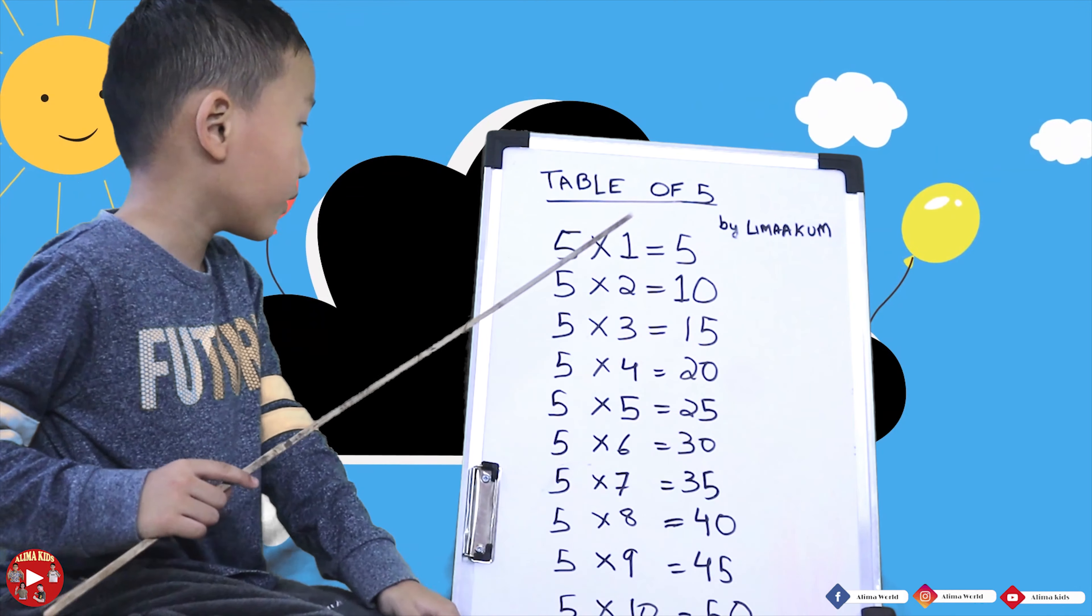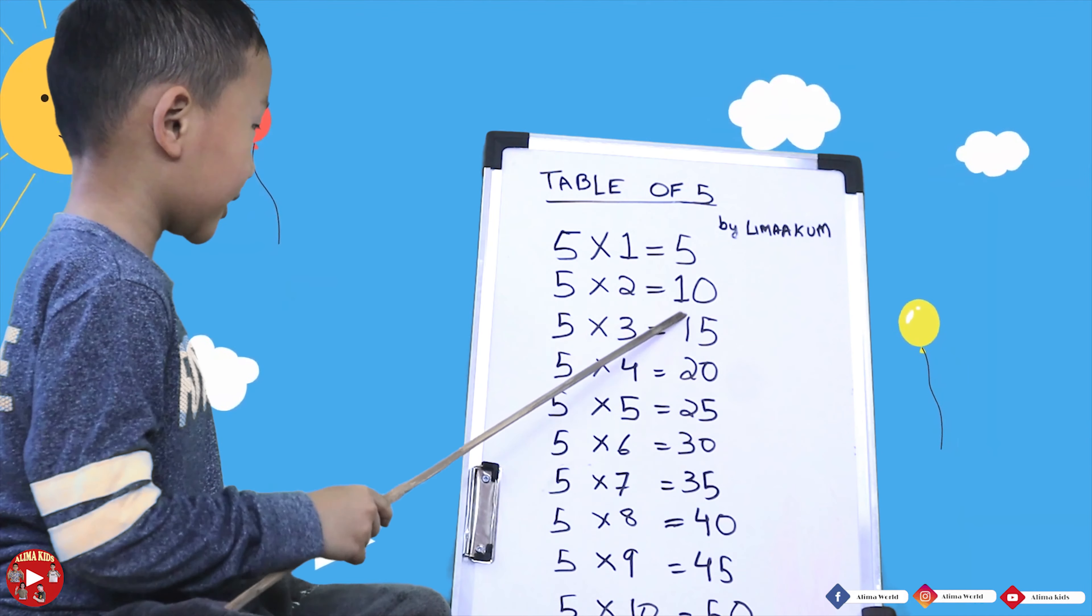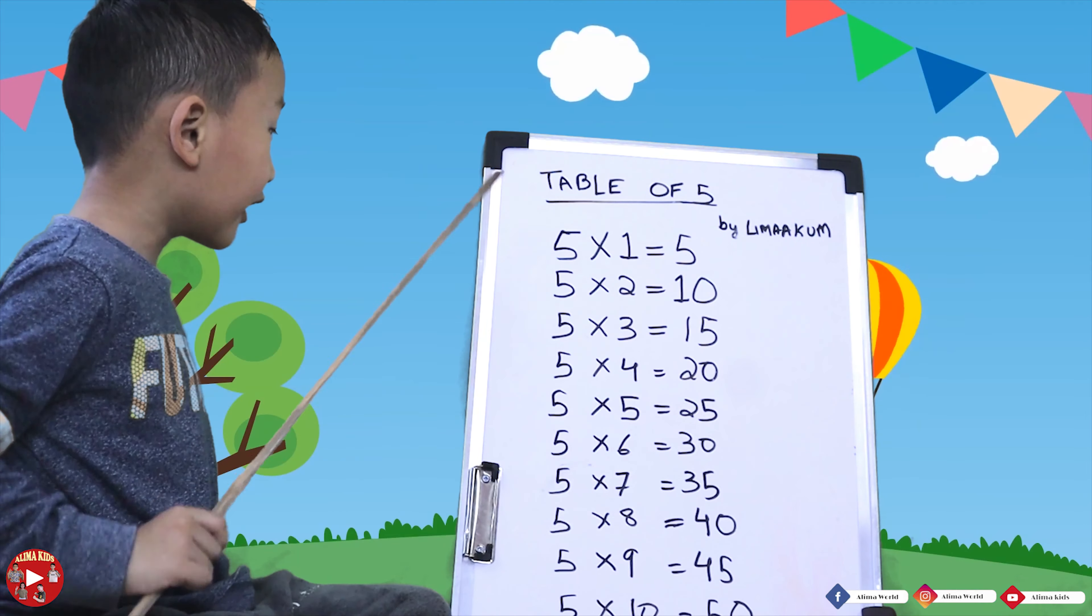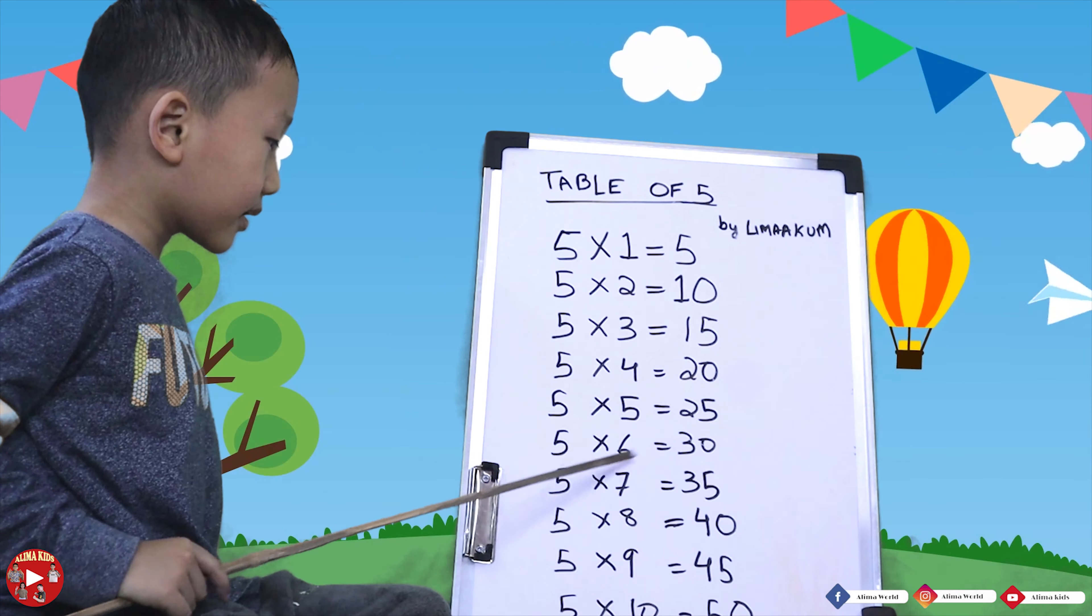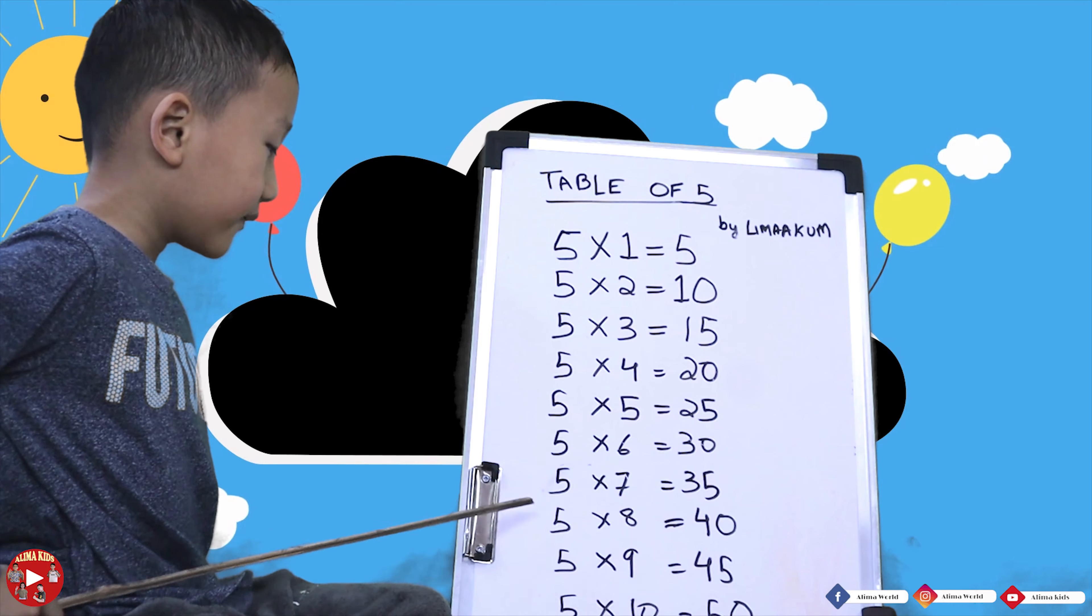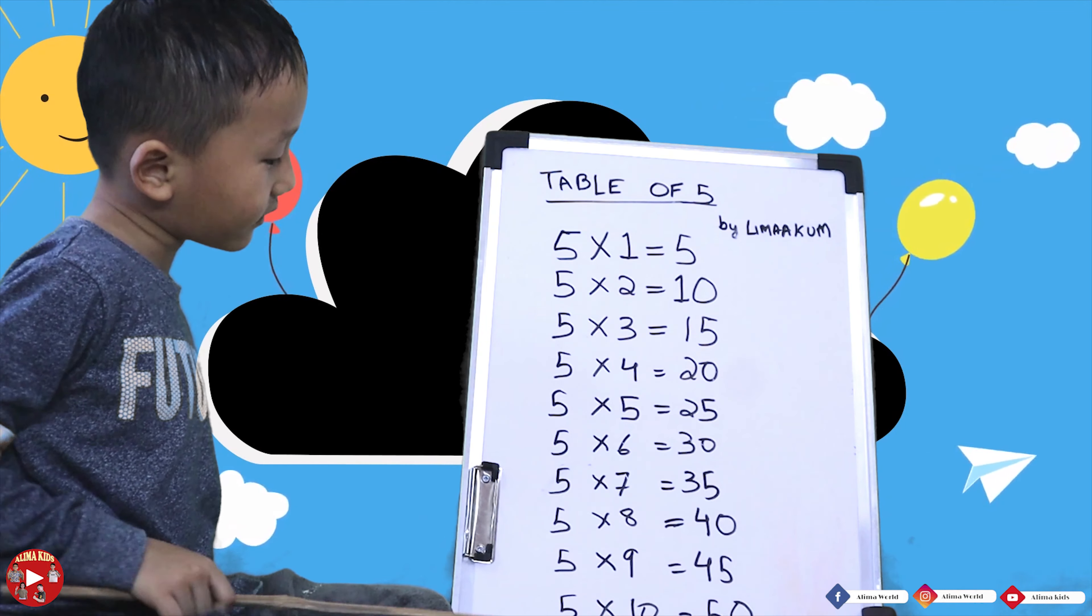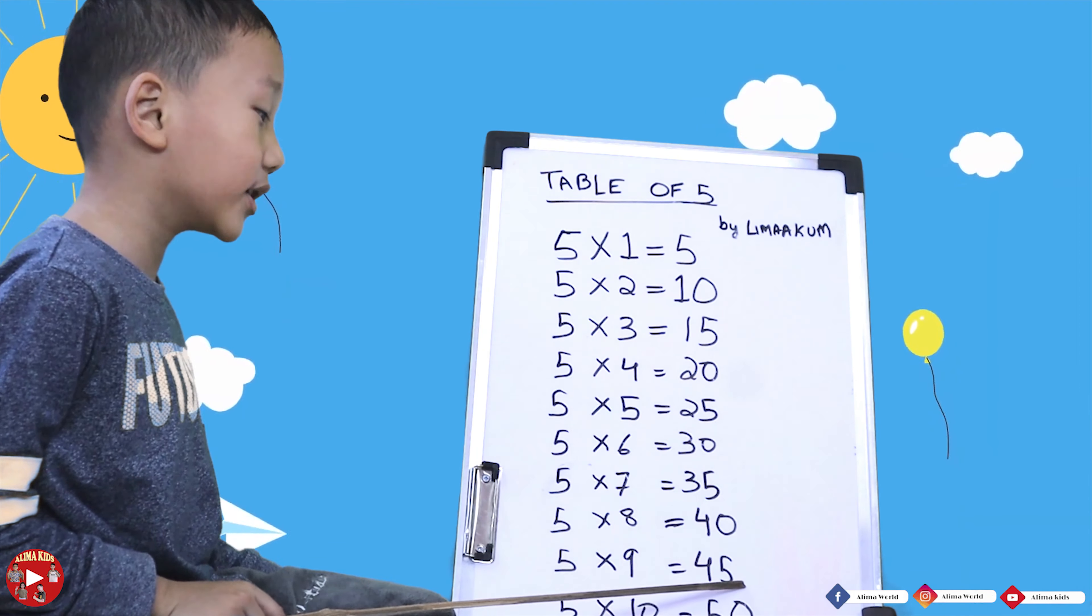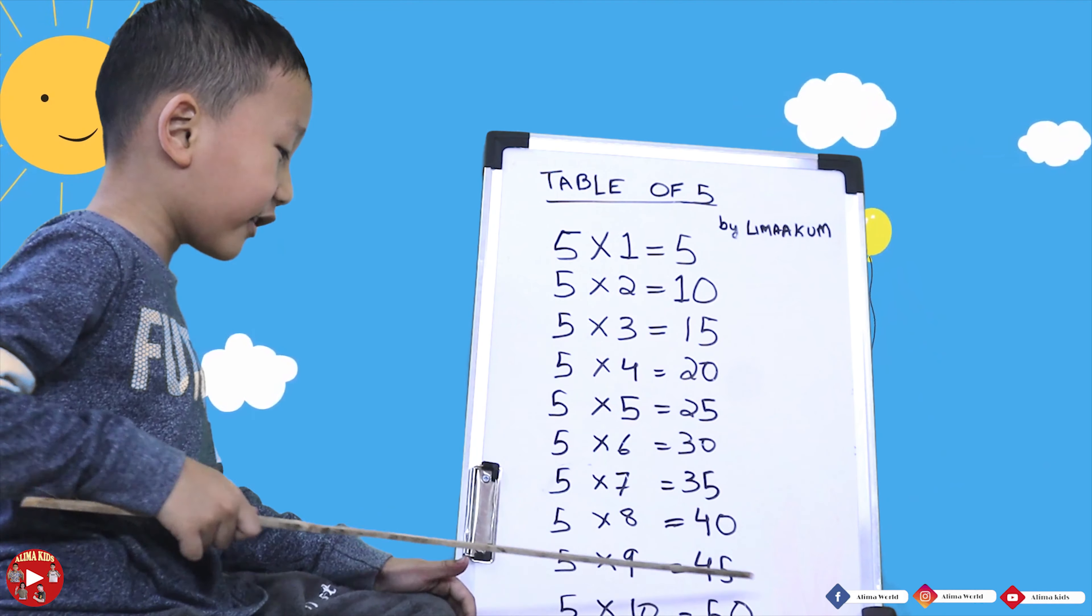Well let's go. Five ones are five. Five twos are ten. Five threes are fifteen. Five four are twenty-six. Five fives are twenty-five. Five six are thirty. Five seven are thirty-five. Five eight are forty. Five nine are fifty, forty-five, forty-five or what? Oh yes forty-five. Five tens are fifty.